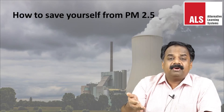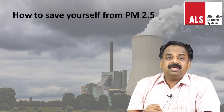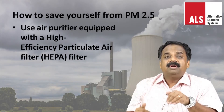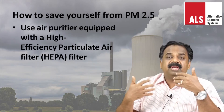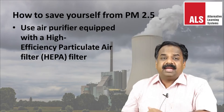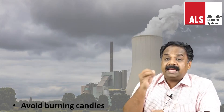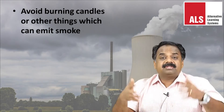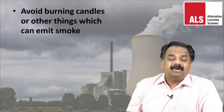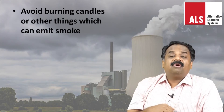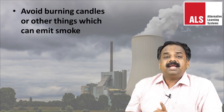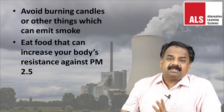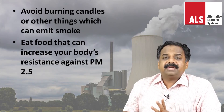To protect ourselves, staying indoors and using high efficiency particulate air (HEPA) filters can reduce the amount of particulate matter we inhale. We should stay indoors as much as possible, and avoid burning candles and incense sticks inside rooms, as the smoke circulates within the room. During puja time, burning many incense sticks and candles adds to particulate matter. Certain foods can also increase the body's resistance against PM 2.5.